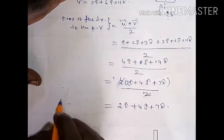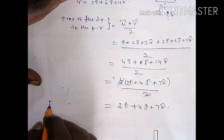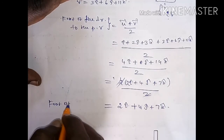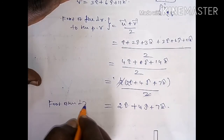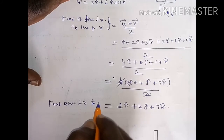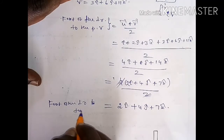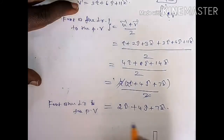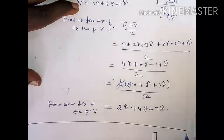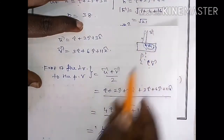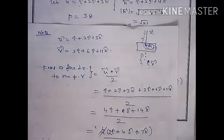So 2i cap plus 4j cap plus 7k cap is the foot of the perpendicular to the position vector. This is the foot of the perpendicular — that is the required foot of the perpendicular.